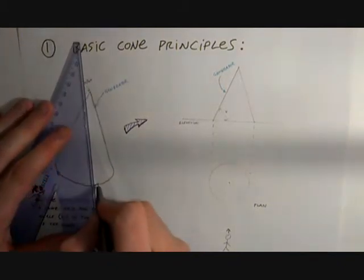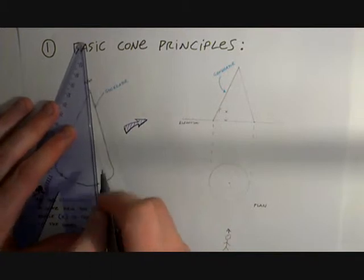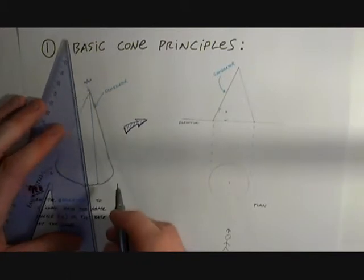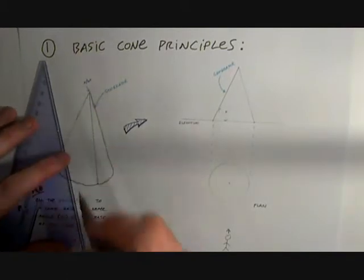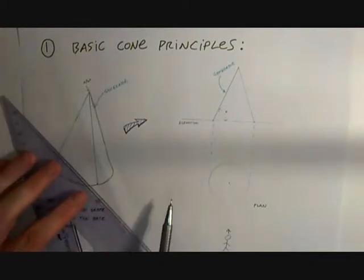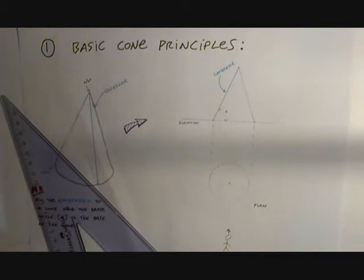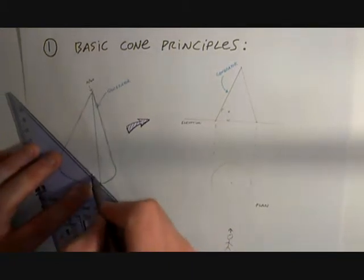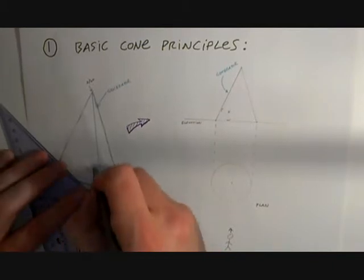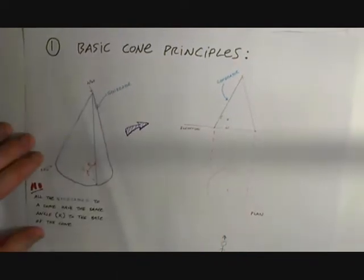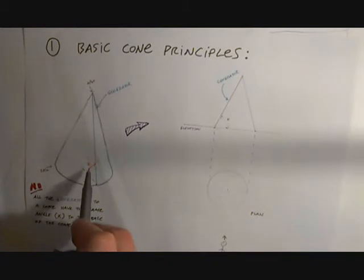So if I draw a line anywhere from the apex to the base of the cone, this will generate a generator line, and the angle formed is x.